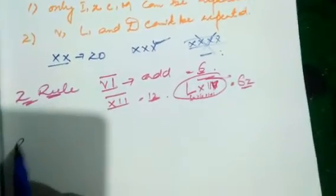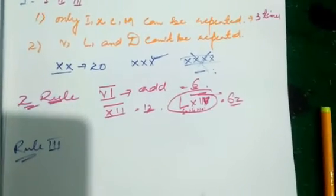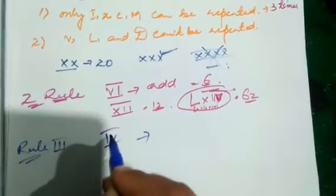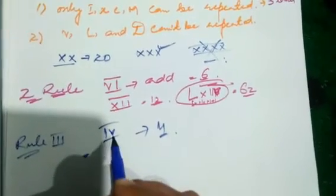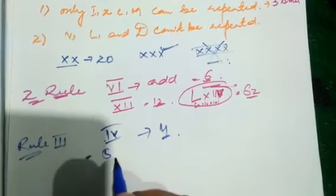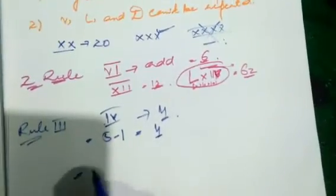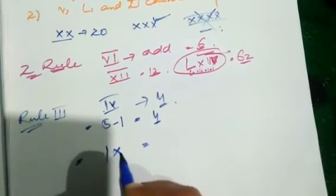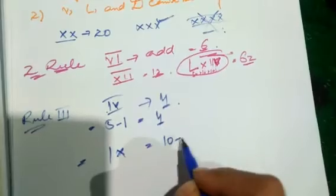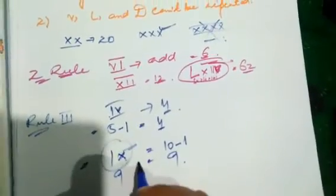Rule number three: if a smaller numeral is on the left side of a larger numeral, it is always subtracted. For example, IV — V is the larger, I is smaller and on the left, so five minus one equals four. Similarly, IX means ten minus one equals nine. We always write nine as IX.